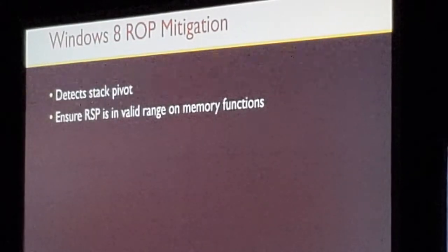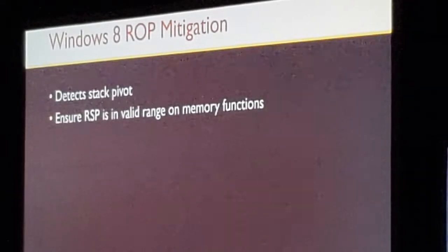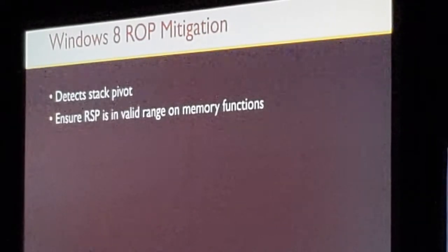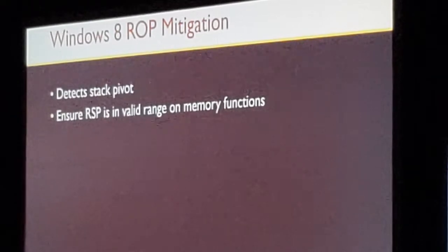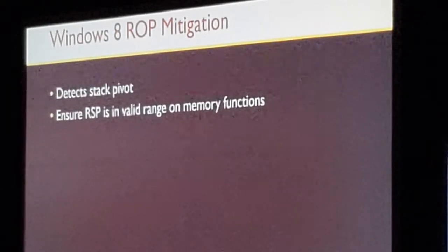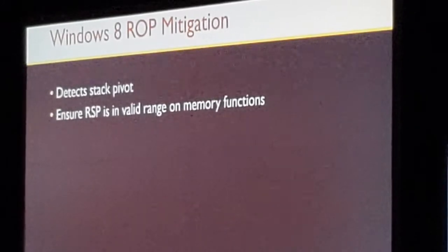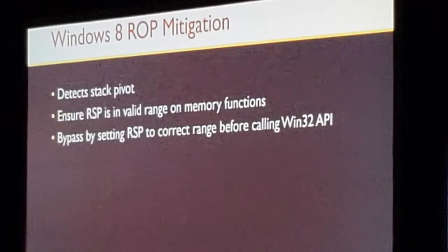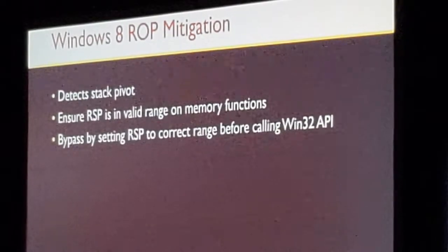The next mitigation is the Windows 8 ROP mitigation — a big name, but it really just detects stack pivots. Whenever you call memory functions on Windows starting from Windows 8, it checks that the stack pointer points to a valid location on the stack. If you used a stack pivot in your ROP, Windows will detect it and crash the software. And it's easy to guess how to bypass it: you simply need to make sure the stack pointer points to a valid stack location when calling Win32 API.